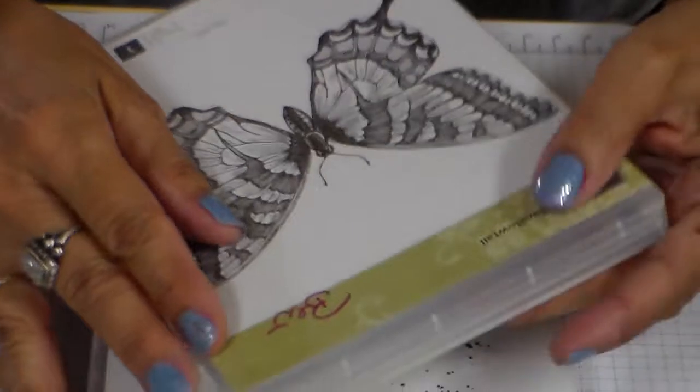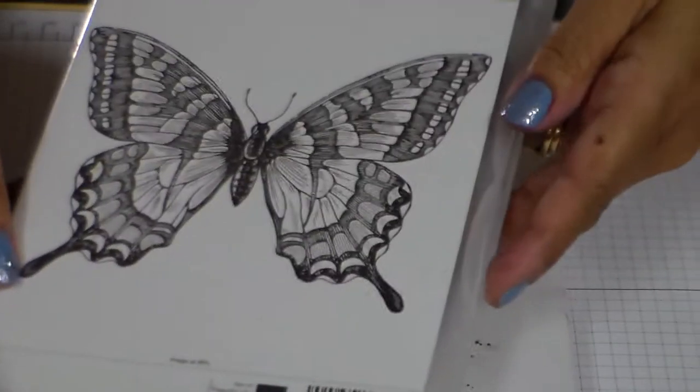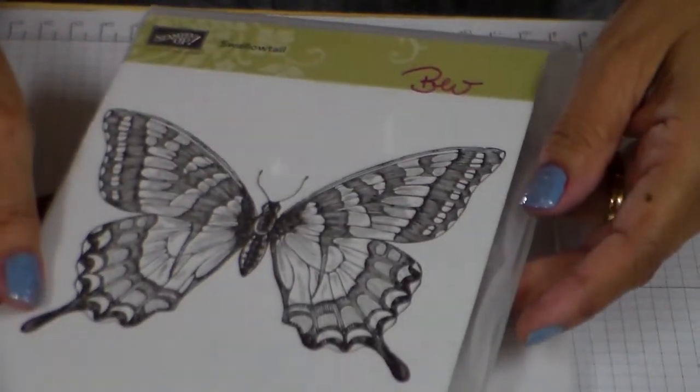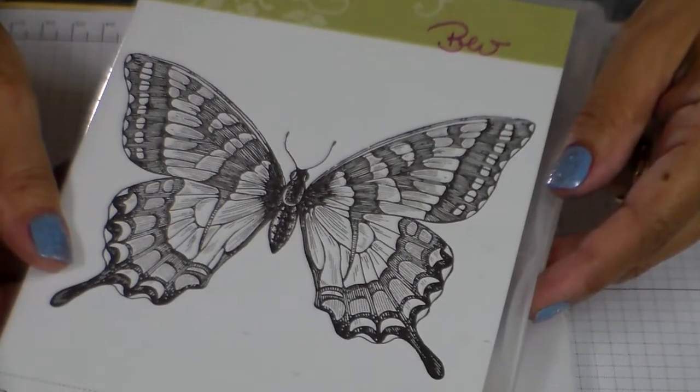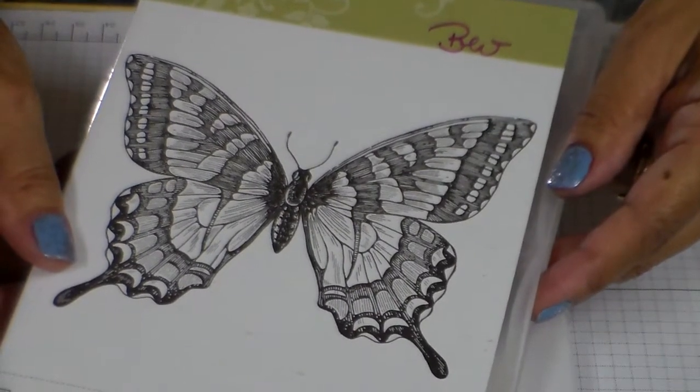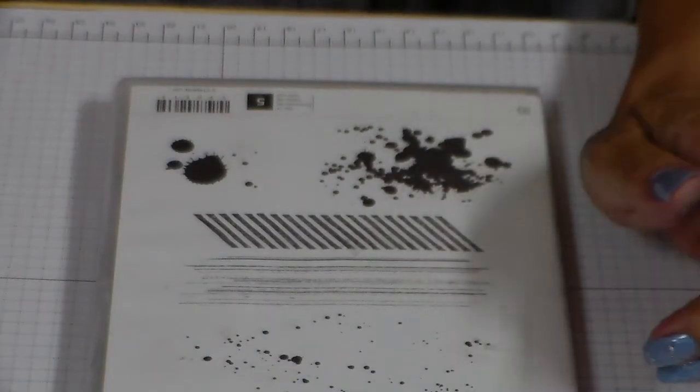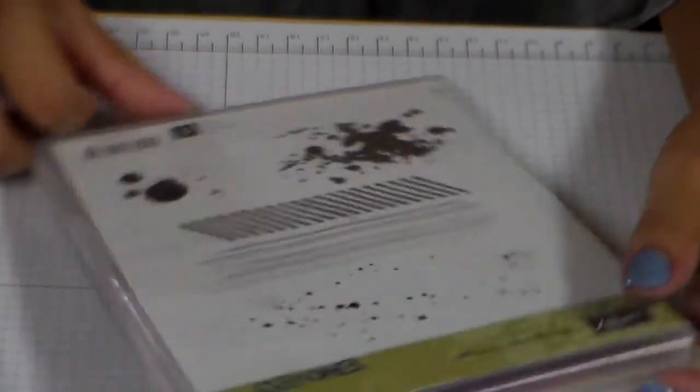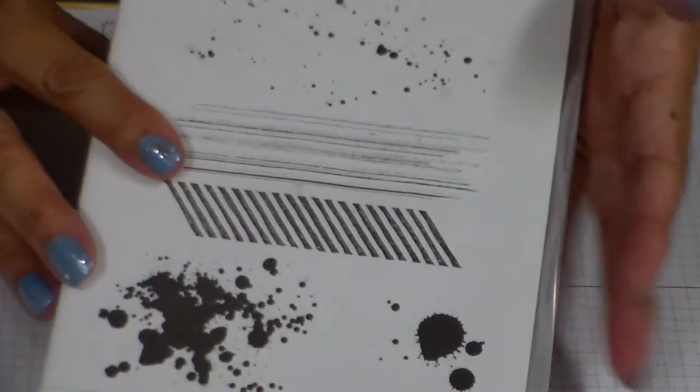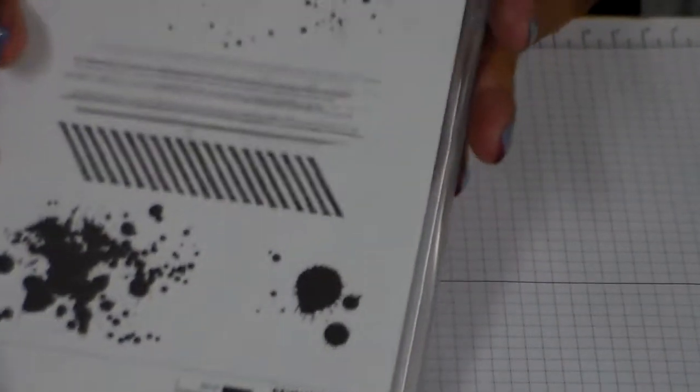One is called Swallowtail. It's that large beautiful butterfly that we have on page 98 of the annual current Stampin' Up! catalog, and then the other is Gorgeous Grunge which is on page 165 of the same catalog.